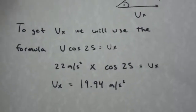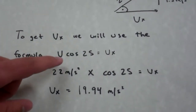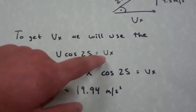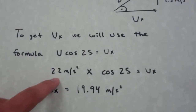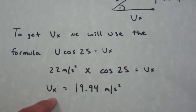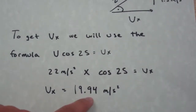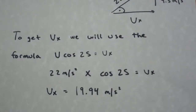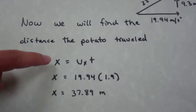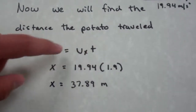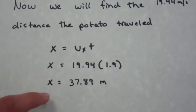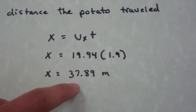We will then find the horizontal velocity, Vx. We will use the formula V times cosine of 25, because that is our degree, equals the horizontal distance. 22 meters per second was our velocity, so I will multiply that by the cosine of 25 to get a horizontal velocity of 19.94 meters per second. Now we will find the distance the potato traveled using the distance formula x equals the horizontal distance times time. x equals 19.94 times our time of 1.9 seconds to get a distance of 37.89 meters.